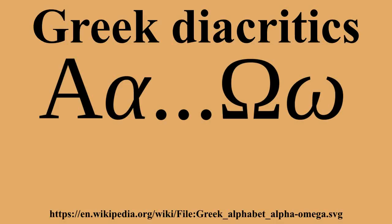The iota subscript is placed under the long vowels alpha, eta, and omega to mark the ancient long diphthongs αι, ηι, and ωι, in which the iota is no longer pronounced. Next to a capital, the iota subscript is usually written as a lowercase letter, in which case it is called iota adscript.